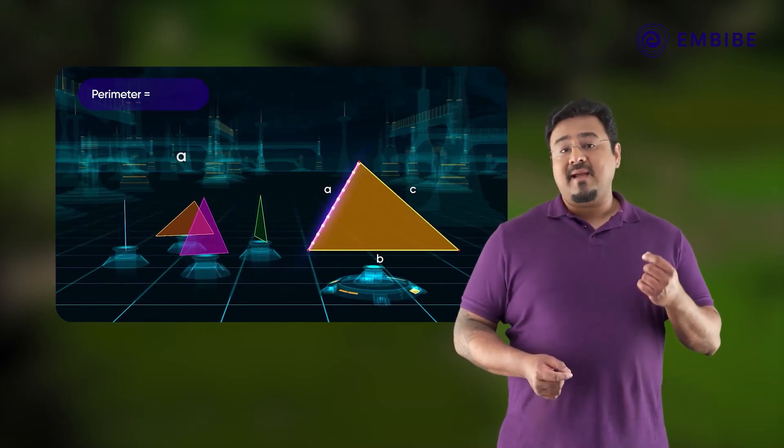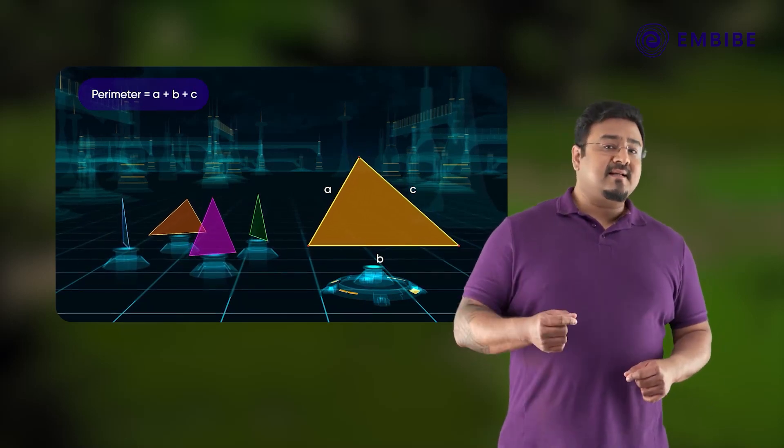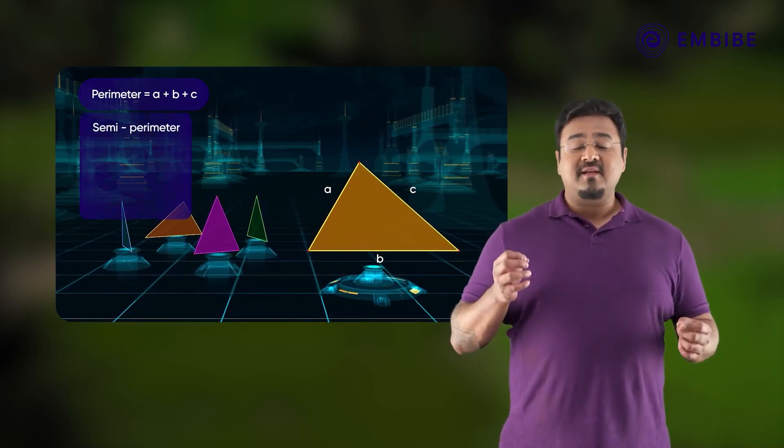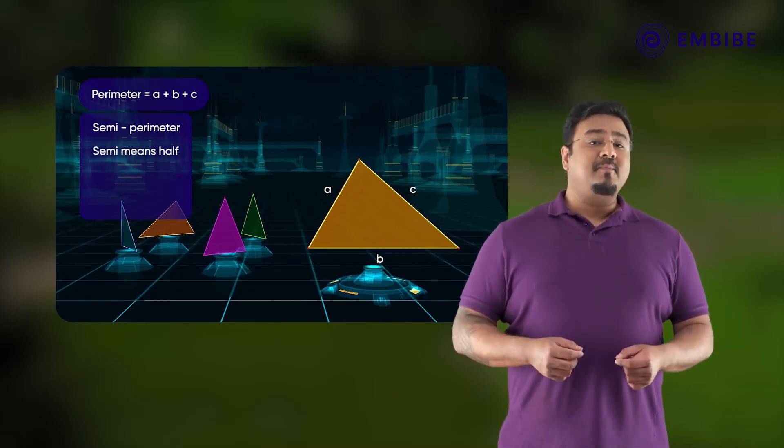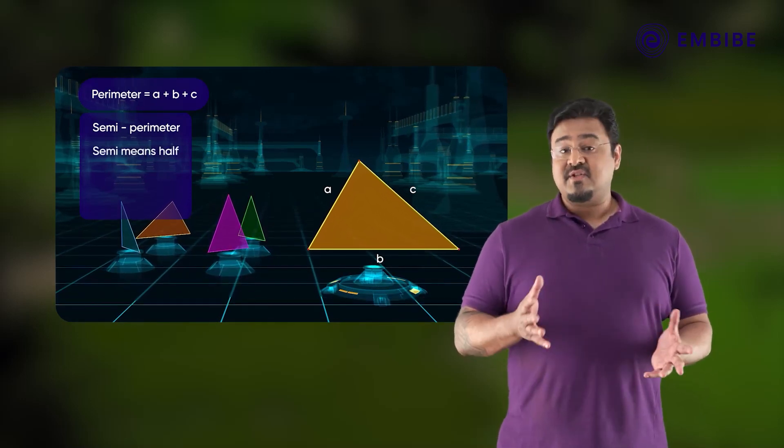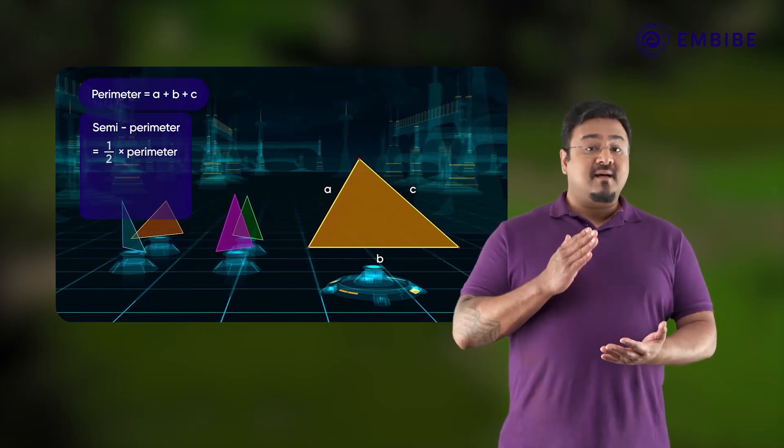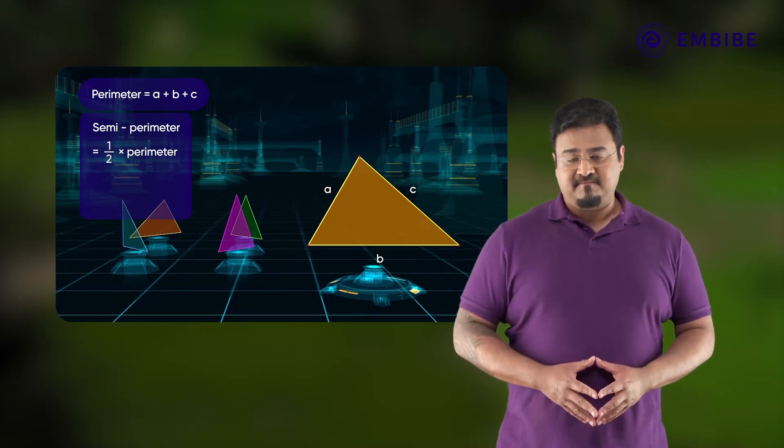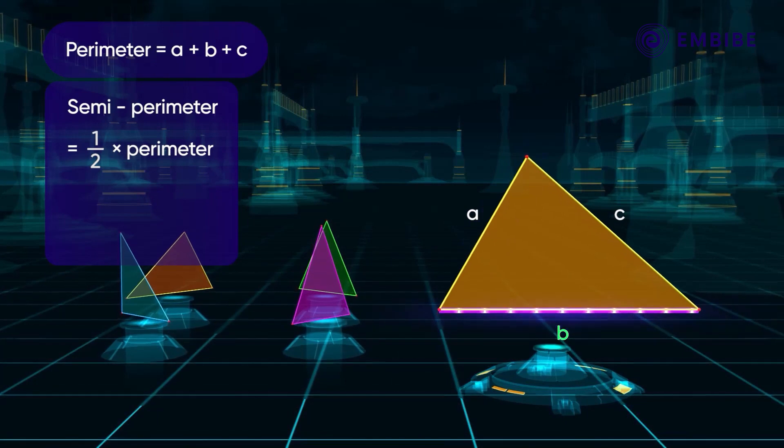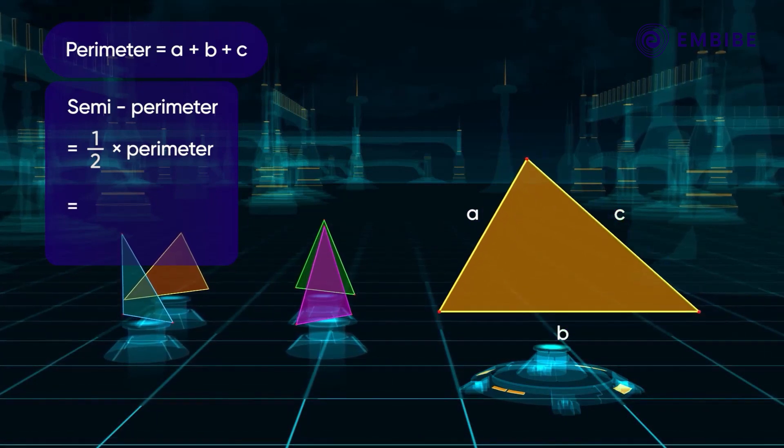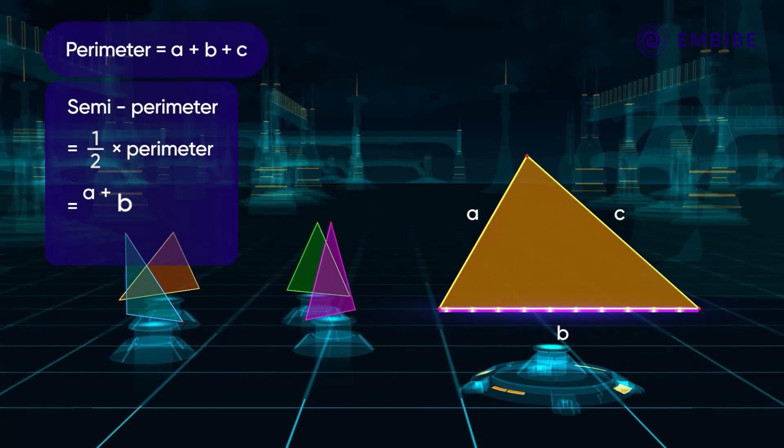Let us consider a triangle with its sides as A, B, and C. Its perimeter is equal to A plus B plus C. Now let's learn a new measure called the semi-perimeter of a triangle. What do you mean by semi? Semi means half. So semi-perimeter means half of perimeter.